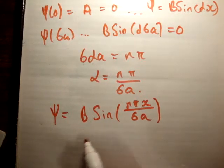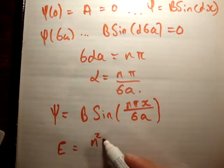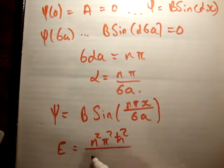And finally, that means when you plug in, we know that α is equal to root 2mE over ℏ squared, and we get our energy value is equal to n²π²ℏ² over 72ma².